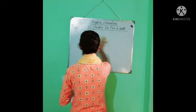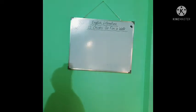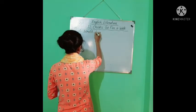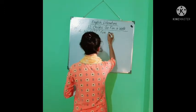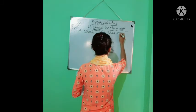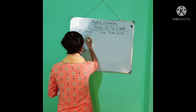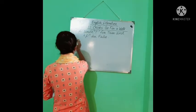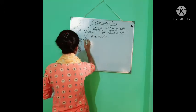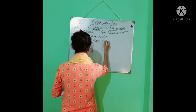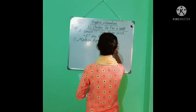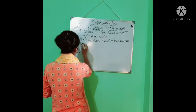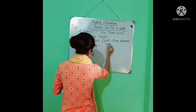Now, question A. Write T for true and F for false. Number one, Mother hen laid five brown eggs. It is true. True answer.